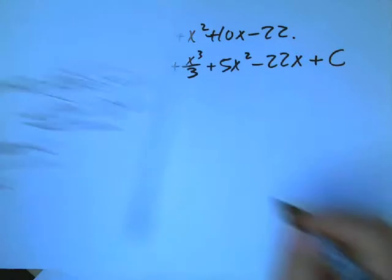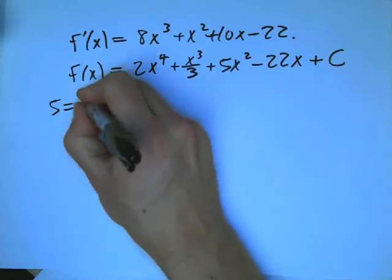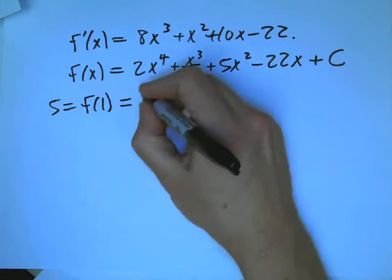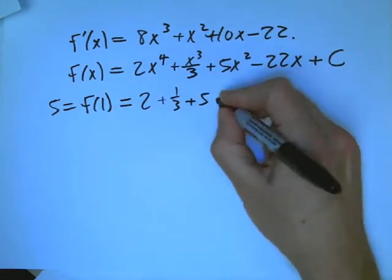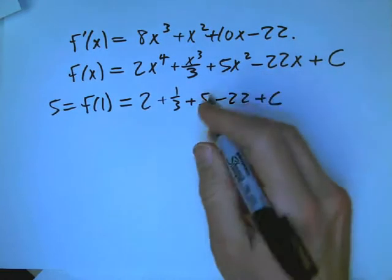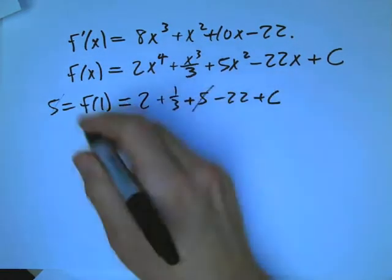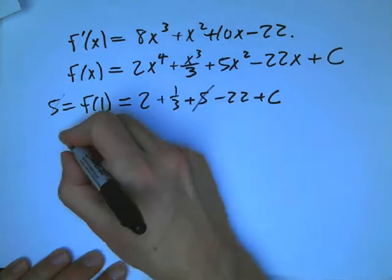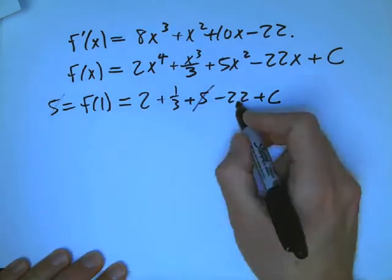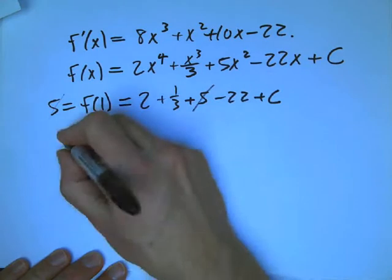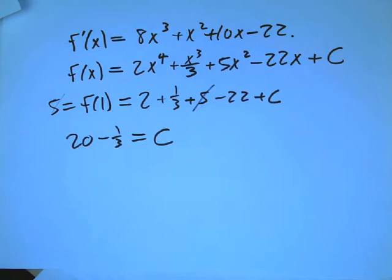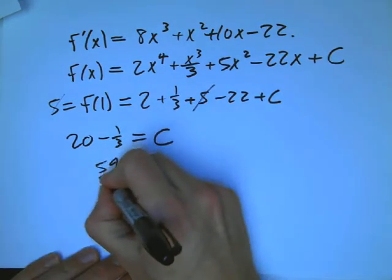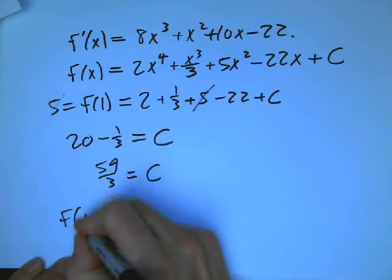Now we can use this information. f of 1 equals 5. So 5 is what we get when we plug in 1 into this function. So 2 plus 1/3 plus 5 minus 22 plus c. The 5s happen to cancel, there's nothing special about that. Move everything over, and we get 2 minus 22 is minus 20. Moving over, it's 20, and we'll simplify that in a second. Okay, so it's 20 minus 1/3, and so that's 59/3. So now we're set.